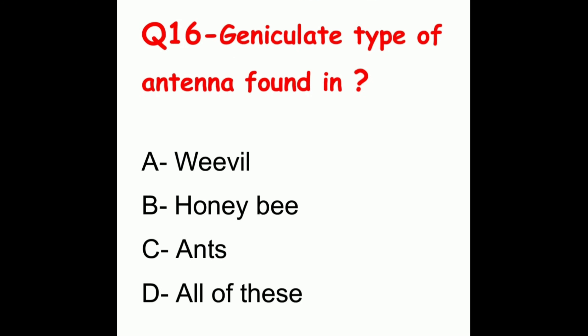Question 16. Geniculate type of antenna is found in? The options are weevil, honeybee, ants, or all of these. The correct answer is all of these.